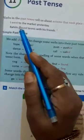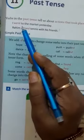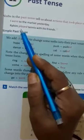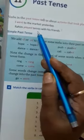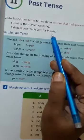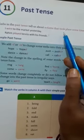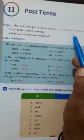Suppose the example is here. I went to the market yesterday. Rahim played tennis with his friends. Here you can see actions that happened before some time.